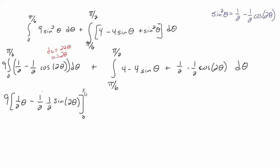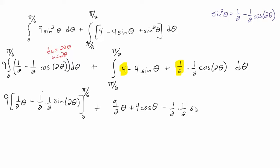Evaluating from 0 to pi over 6. For the second integral, combining the 4 and the one half gives nine halves, so we get nine halves theta plus 4 cosine theta minus one quarter sine 2 theta, evaluated from pi over 6 to pi over 2.